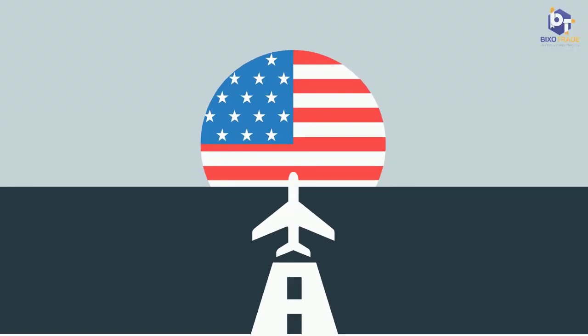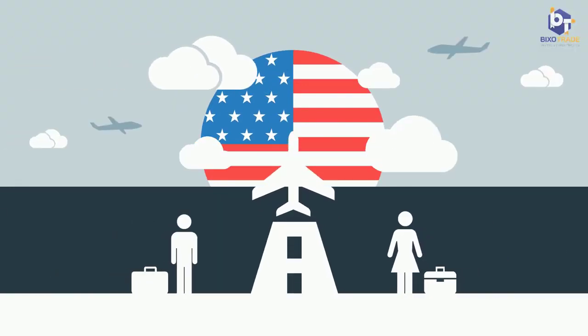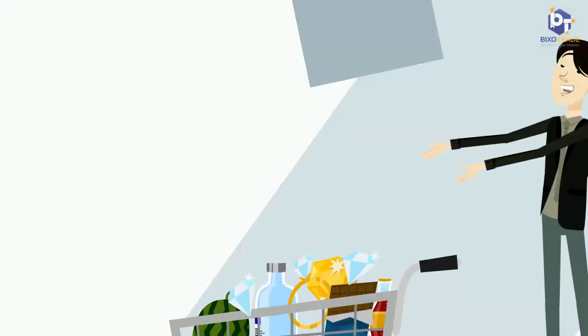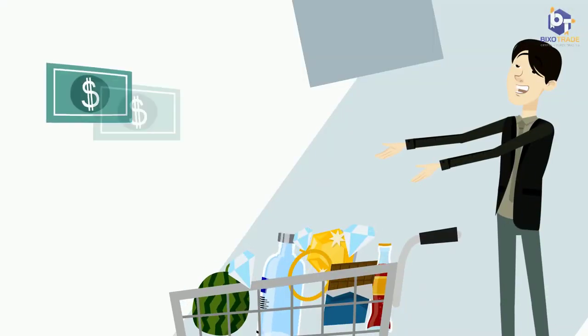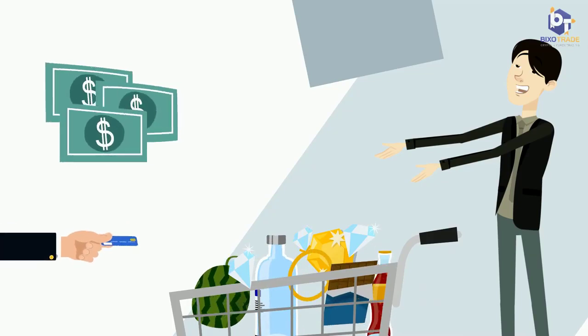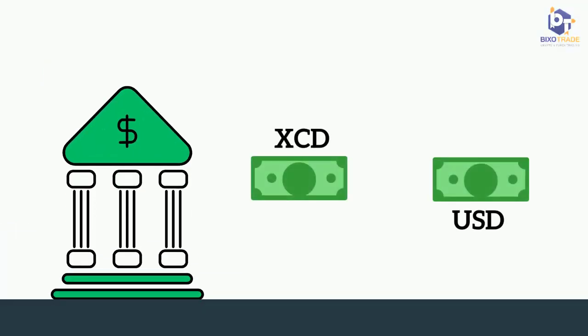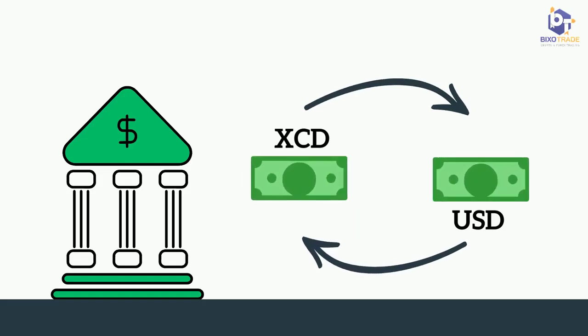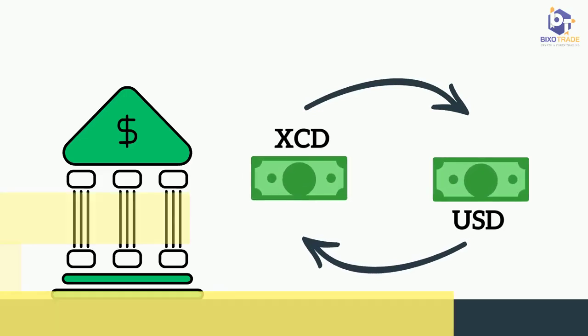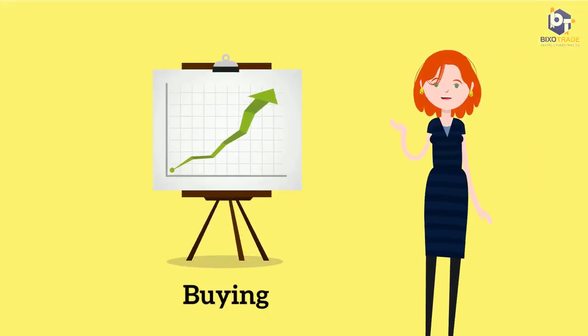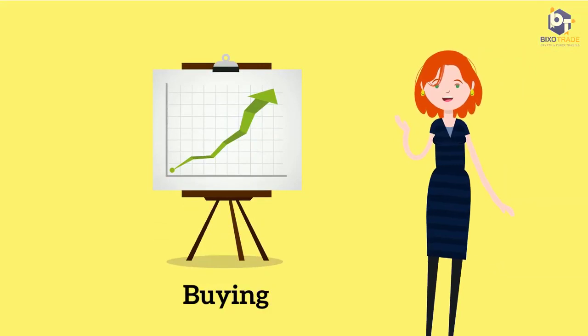For example, you travel to the United States for vacation. During your stay, you would have to use the United States dollar to make purchases. And so, you would have to go to the bank or the Cambio to exchange your Eastern Caribbean dollars for US dollars. This exchange is the transaction of buying.